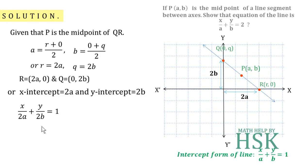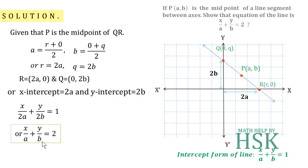We get the equation x/(2a) + y/(2b) = 1. The 2 can be taken as common and cross-multiplied to give x/a + y/b = 2, which is what we had to prove. This is how we prove that the equation of the line is x/a + y/b = 2.